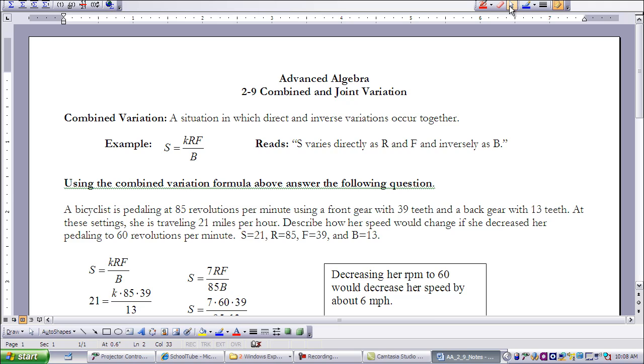So let's do a little vocabulary lesson here first. I'd like to look at combined variation. It's a situation in which we have both direct and inverse variations occurring together.